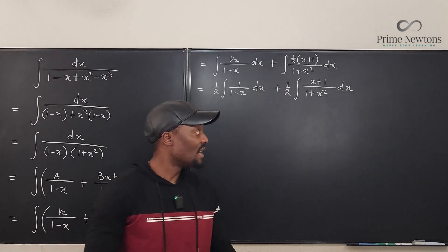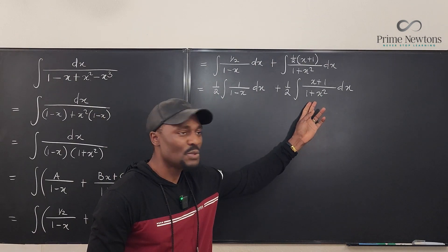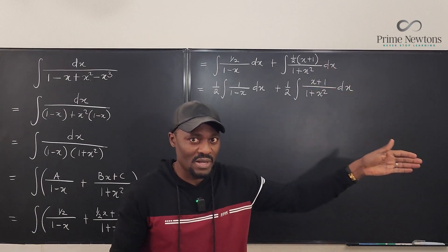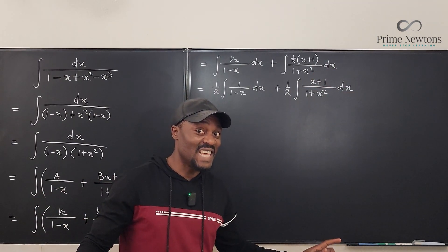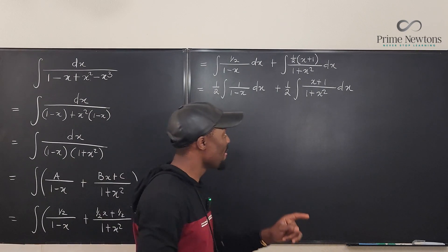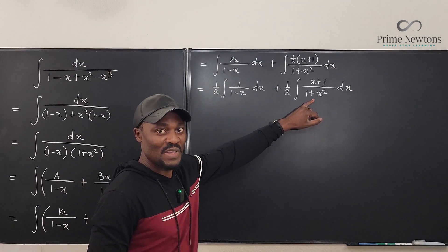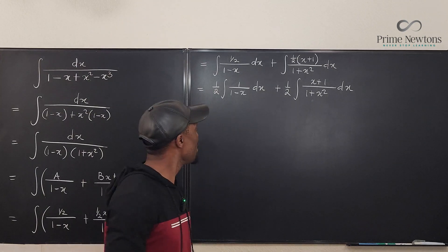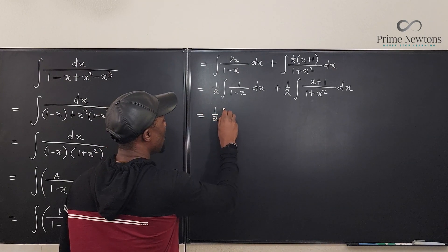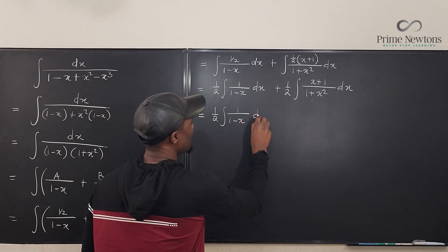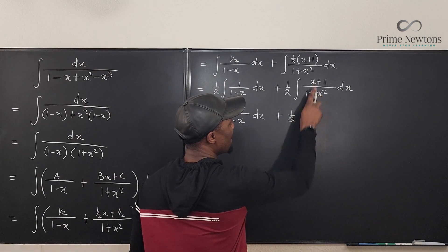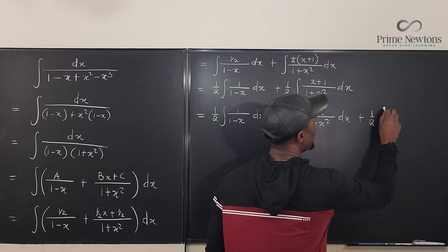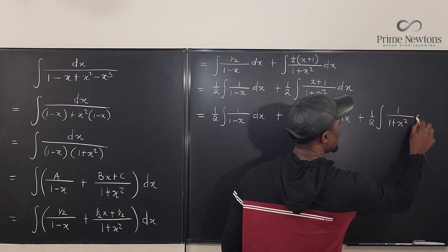This becomes: (1/2) times the integral of 1/(1 - x) dx, plus (1/2) times the integral of (x + 1)/(1 + x²) dx. Note that u-substitution doesn't work directly here because the derivative of (1 + x²) is 2x, but we need (x + 1). So we further split the second integral: (1/2) times the integral of x/(1 + x²) dx, plus (1/2) times the integral of 1/(1 + x²) dx.